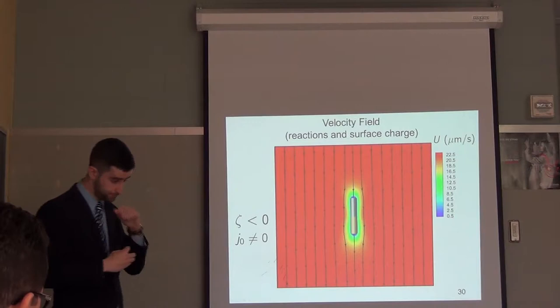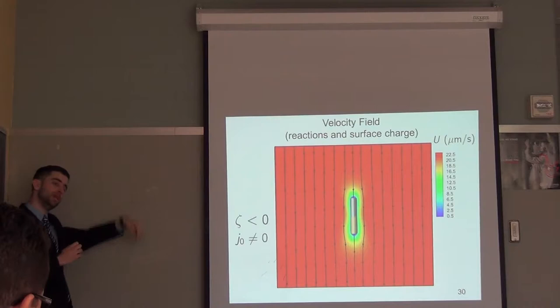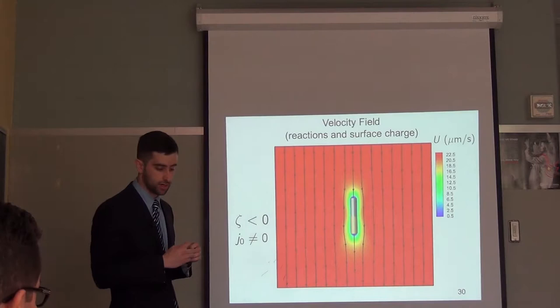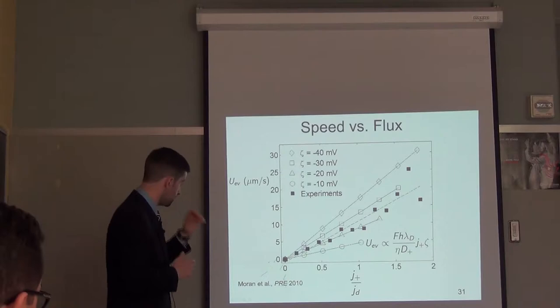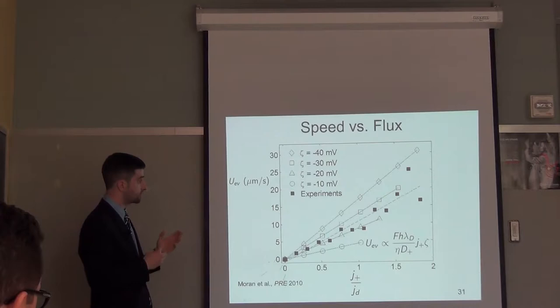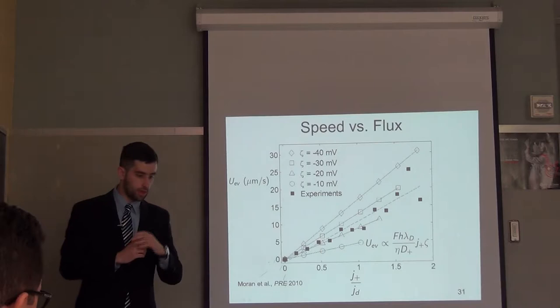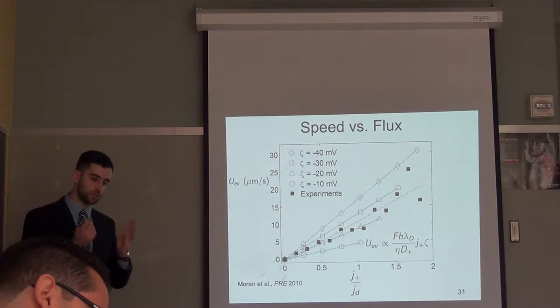To measure swimming speed, we look on the opposite end of the simulation domain, about 50 rod lengths away from the particle, and measure the fluid speed downward — taking that as the swimming speed. Surface charge essentially breaks the symmetry of the quadrupolar flow and leads to movement of the rod. We can look at effects of varying zeta potential and reaction rate independently. The open symbols show simulations for four different values of zeta, and black symbols are experiments. The linear relationship between flux and speed is confirmed, and the speed also scales linearly with zeta potential. We also see pretty good agreement with experiments assuming a zeta potential of about negative 25 millivolts.